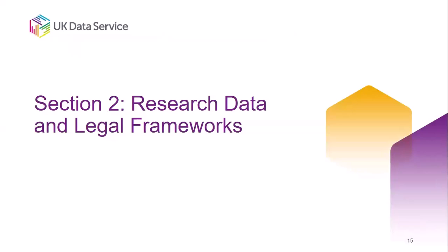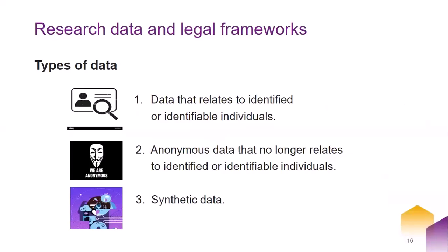The next section is about legal frameworks that govern research data. In the context of data sharing, it's useful to take a broader classification of research data by the Health Research Authority. According to the HRA, data or information is broadly classified into three main categories: information that relates to identified or identifiable individuals, information that no longer relates to identifiable individuals — sometimes referred to as anonymous data — and synthetic data.